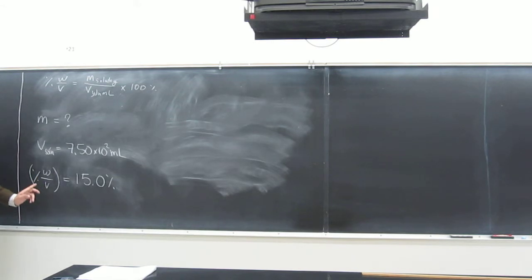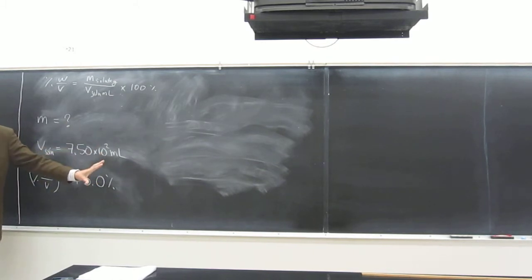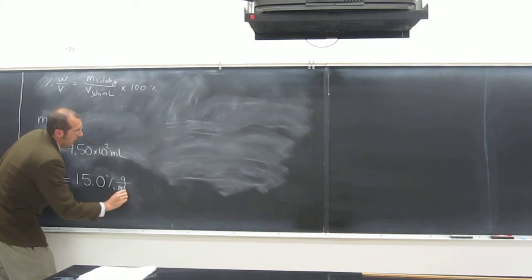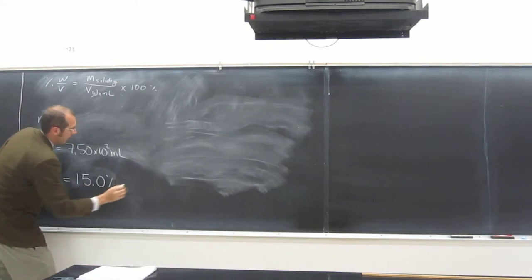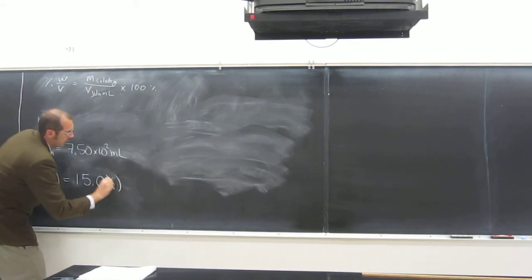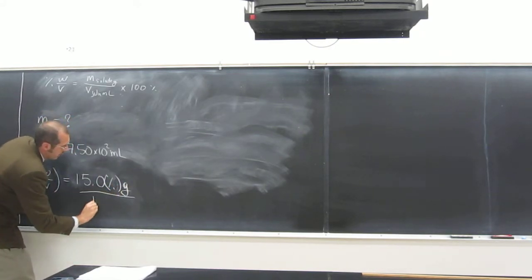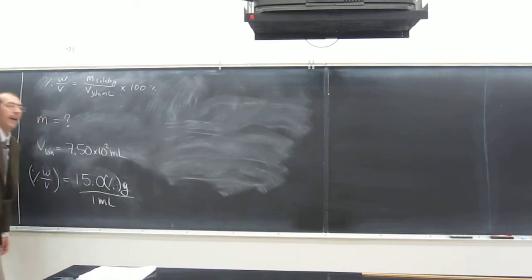So, actually, if you want to think about it, it's actually percent grams per mil. So if you're doing it this way, if you want to cancel out your units, like I always teach you, the way to write your units would be like this. It'll make it a lot easier.